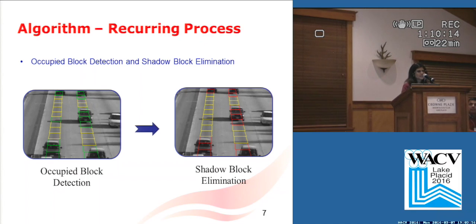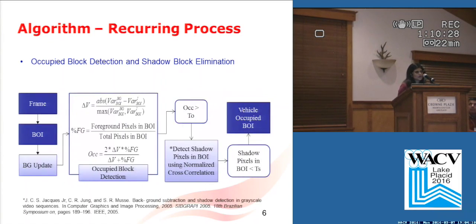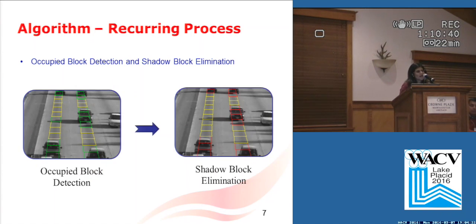So after the occupied block detection, as you can see with the vehicles, the moving shadows are also detected. So we need to get rid of those shadows to be able to get only the vehicle blocks. For that process, we are using a paper on normalized cross correlation, but we are tweaking it a little bit to make it more optimized. Once we are done with all this, we have the vehicle blocks, which can be seen on the right.